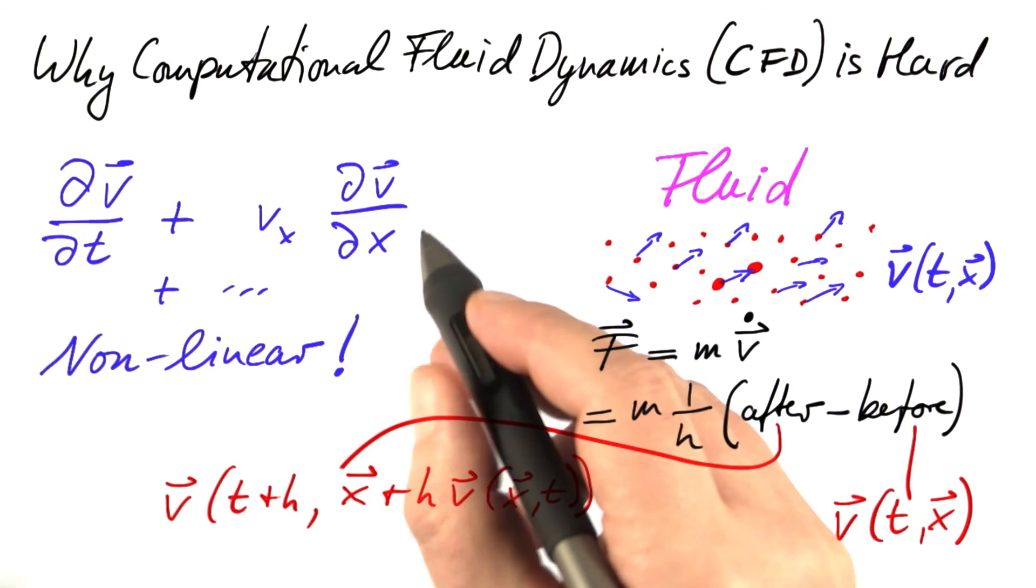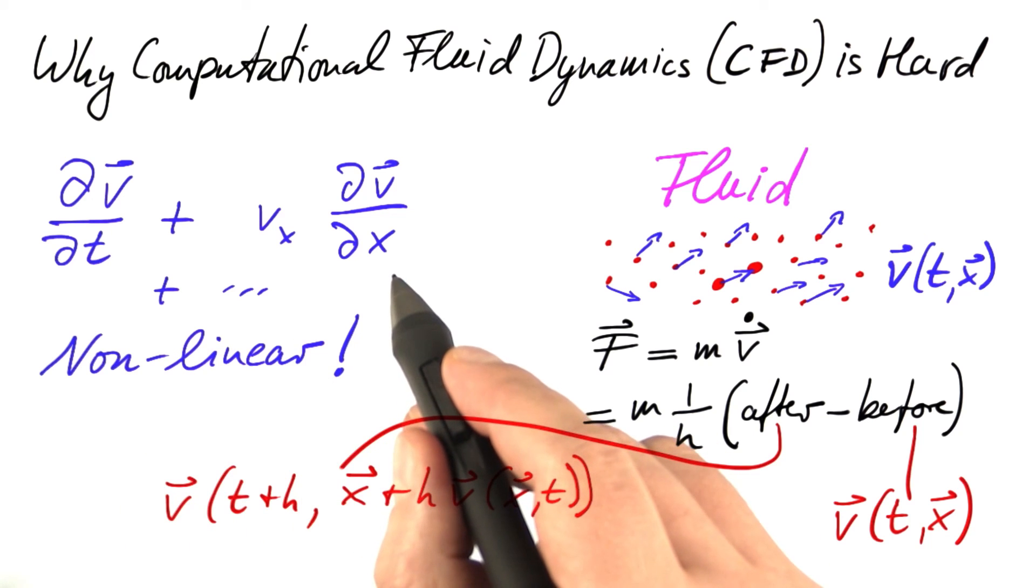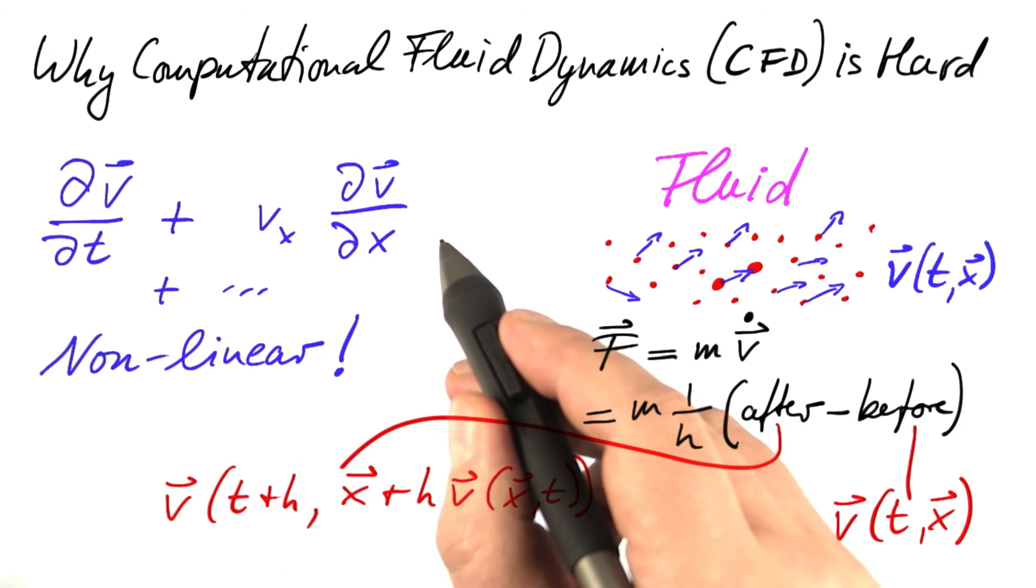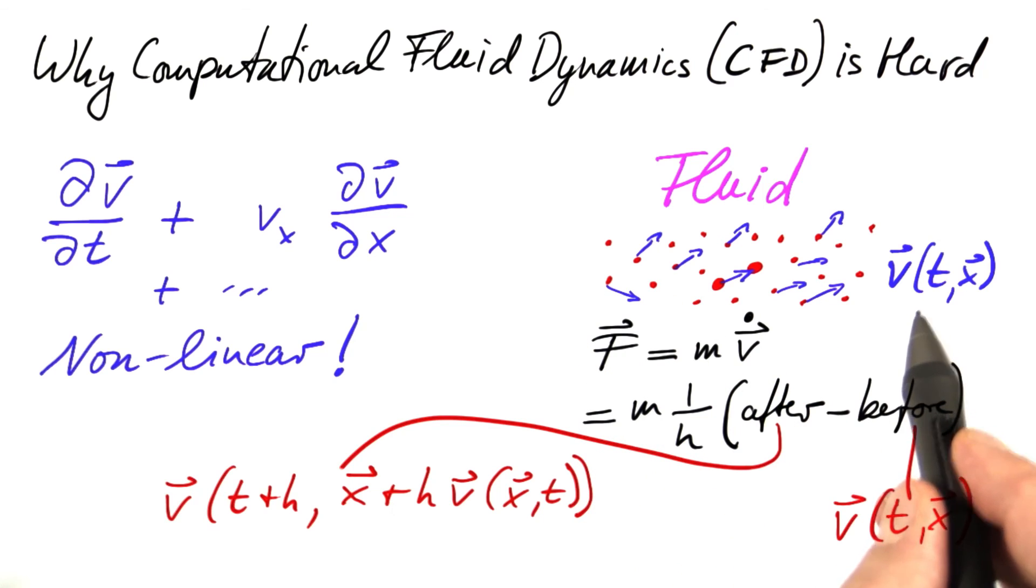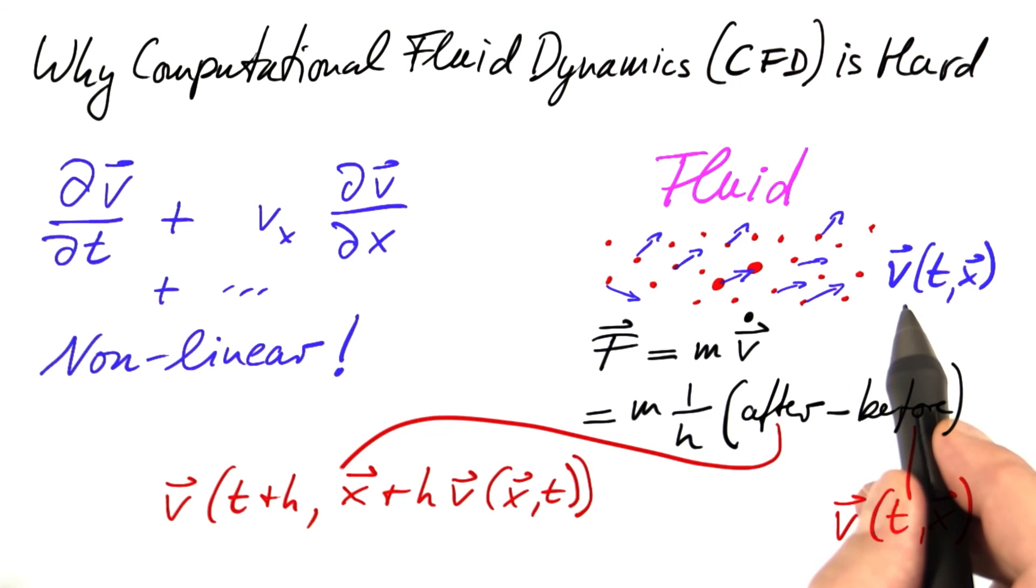And this is inherently nonlinear. We have a product of a function that we're looking for, the velocity field with itself. And this is going to make solving the differential equation that results from this really hard. Finally, however, even though the resulting equation, the so-called Navier-Stokes equation, is going to look pretty complex, it's nothing else but Newton's law applied to the velocity field.